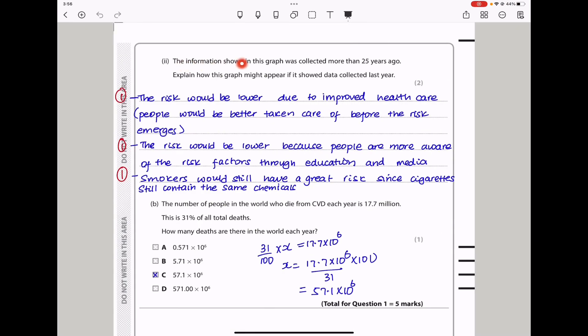Here they say the information shown in this graph was collected more than 25 years ago. Explain how this graph might appear if it showed data collected last year. These days, there is better health care. People are more educated about the risk factors, so I would assume that if this data was collected last year, that risk would be lower.